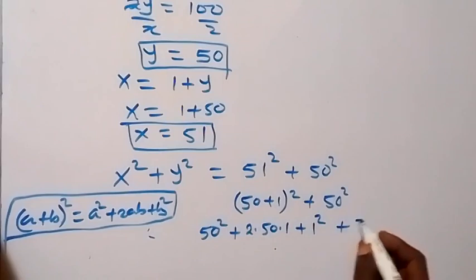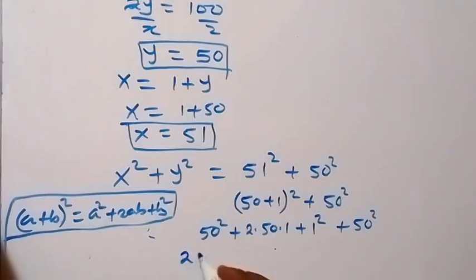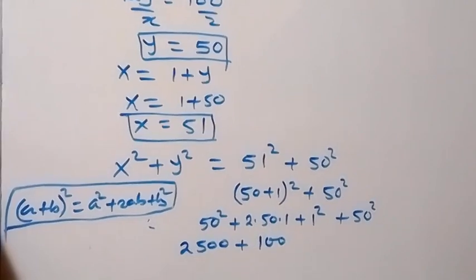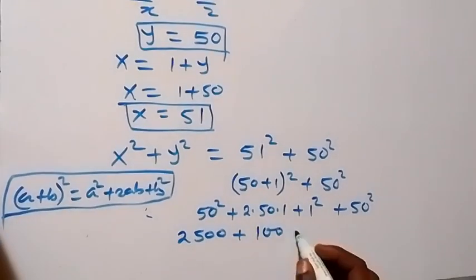50² is 2,500, so we have 2,500 plus 2 times 50 times 1, which gives us 100, then plus 1² which is 1, then plus 2,500.